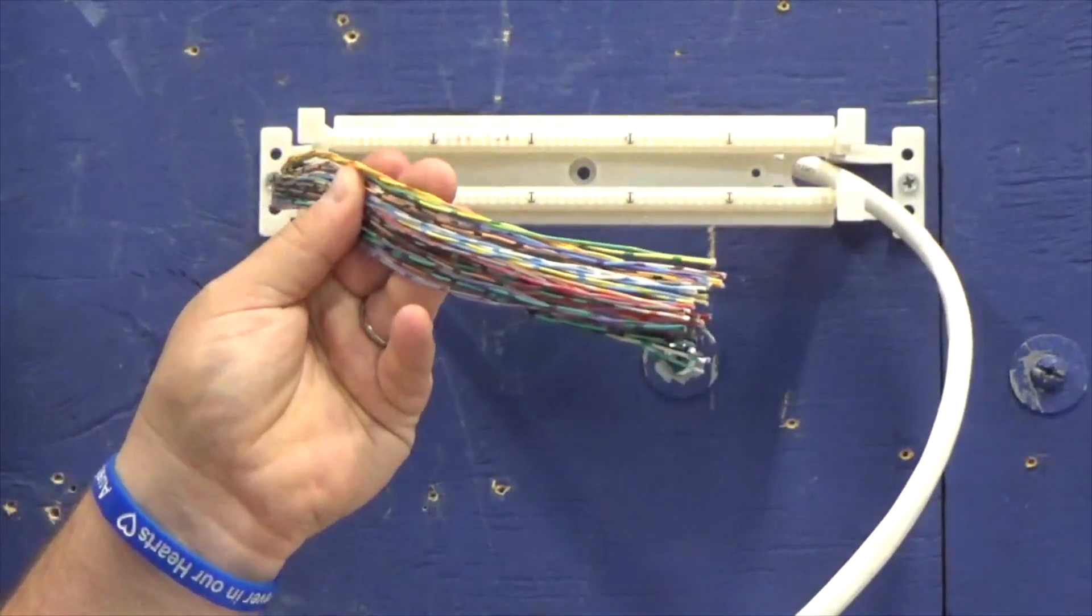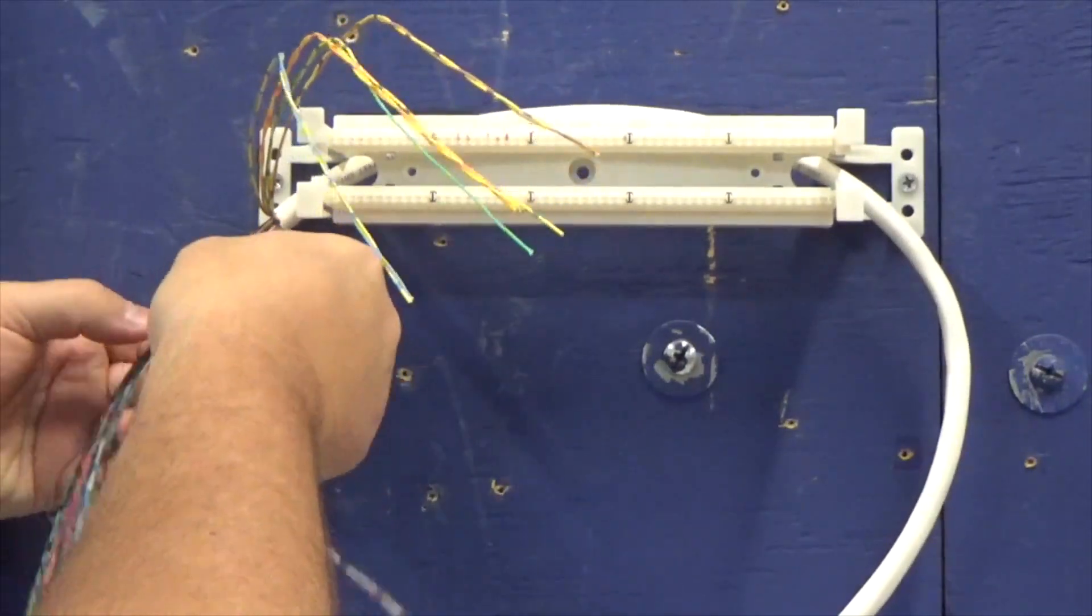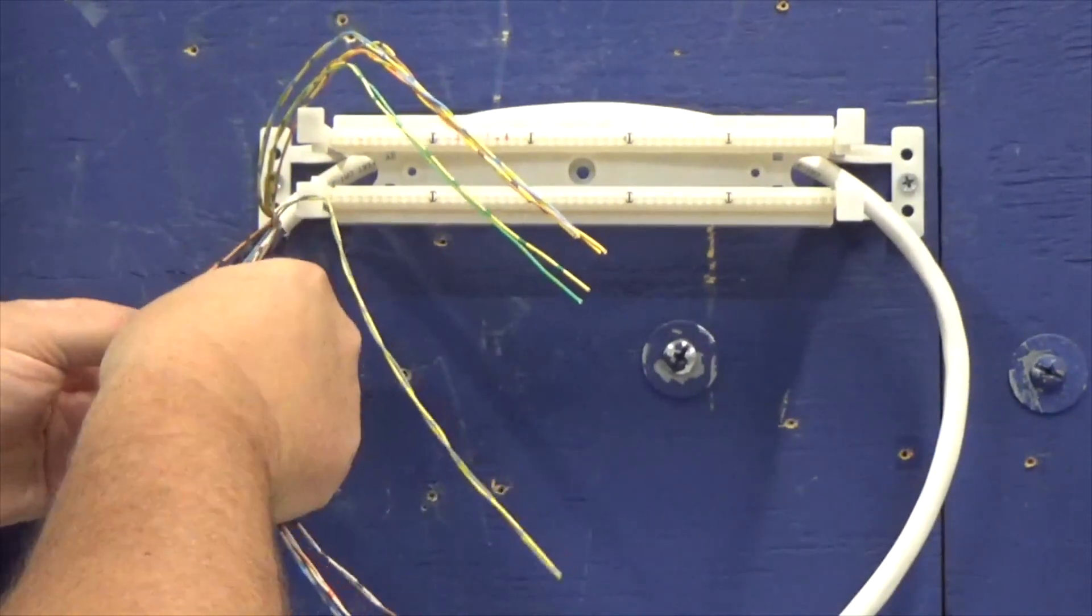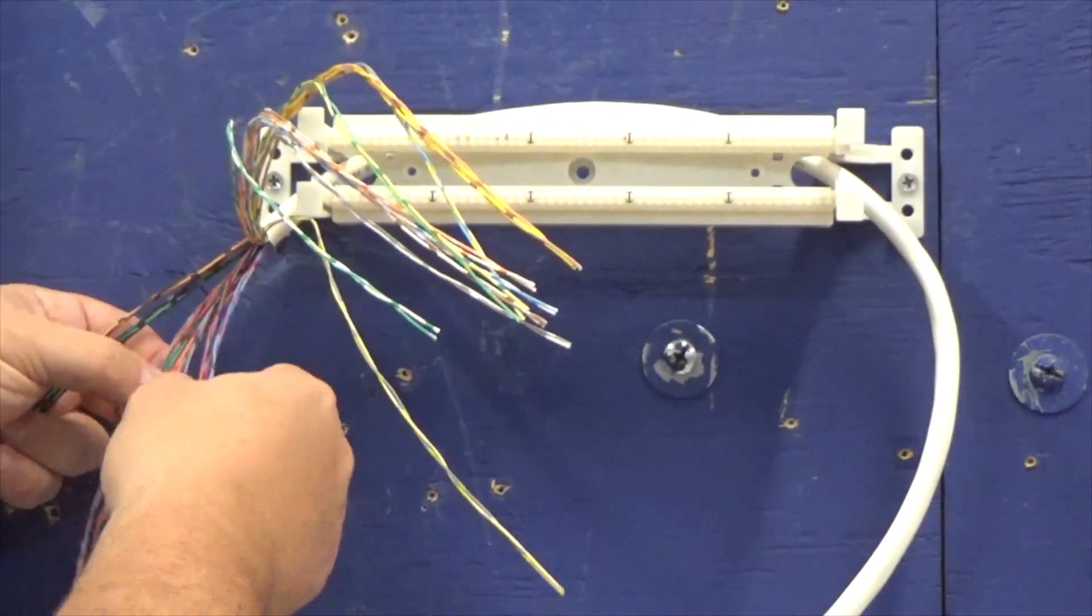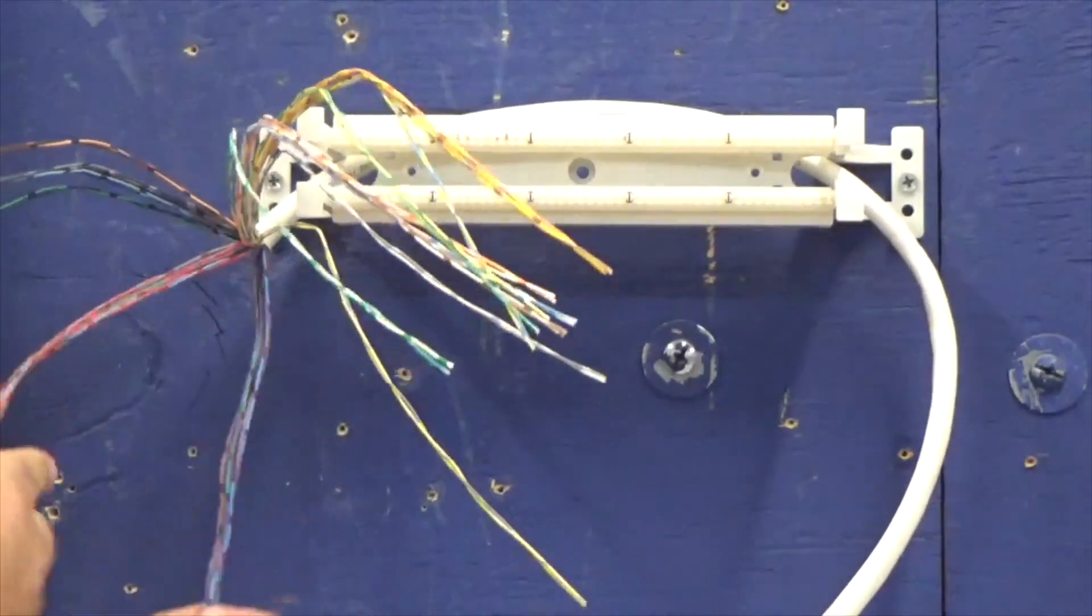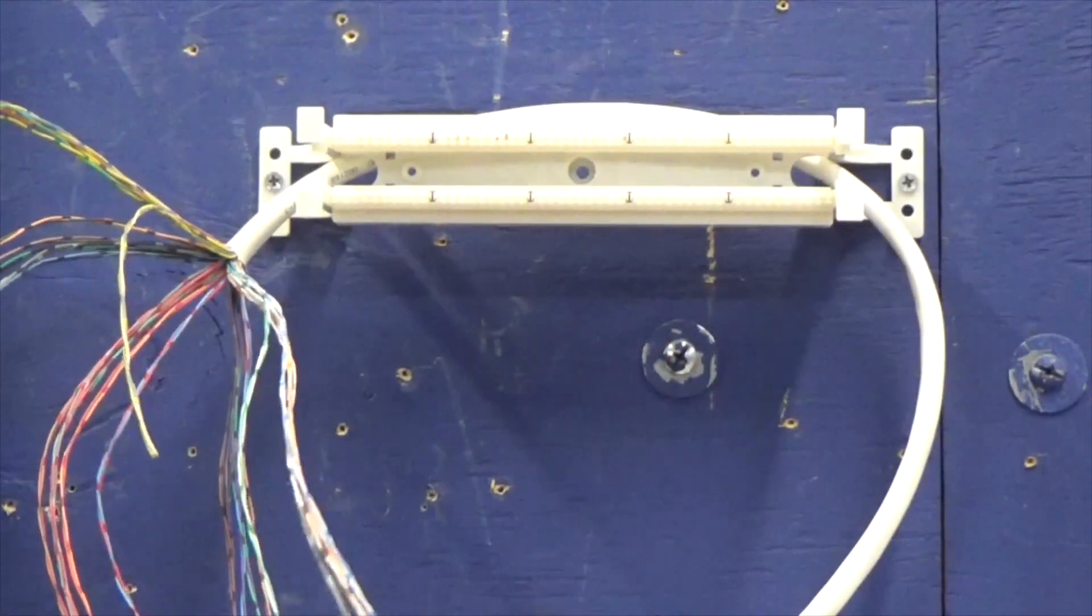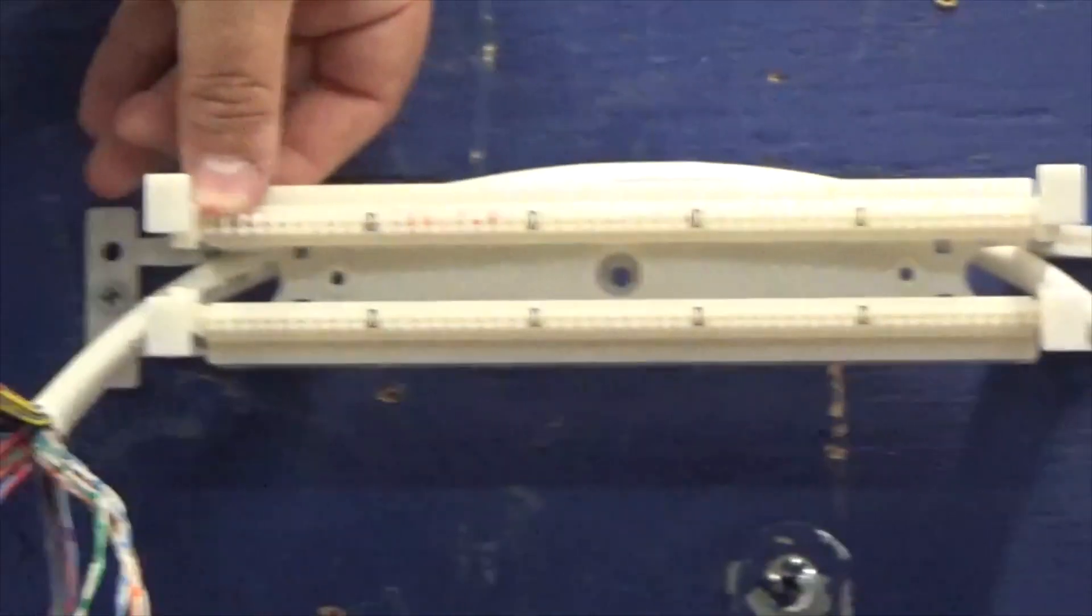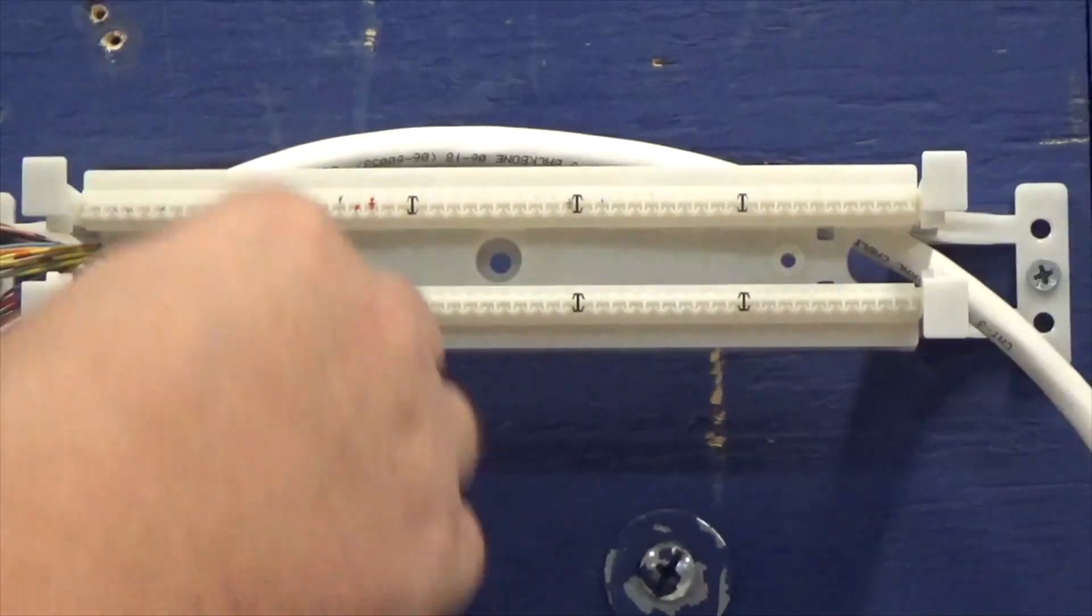With that being said, we have our wire stripped. First thing we have to do, we have to separate our pairs. Now by separating the pairs, now we're going to start from here. We're going to lay them in. So what we're going to do is we're going to tuck our wire. And we're going to start with pair number one.